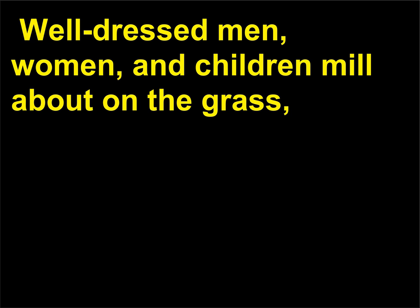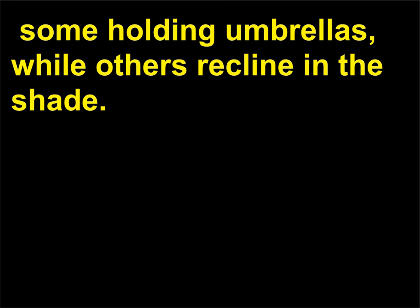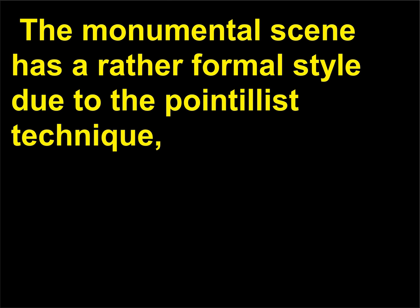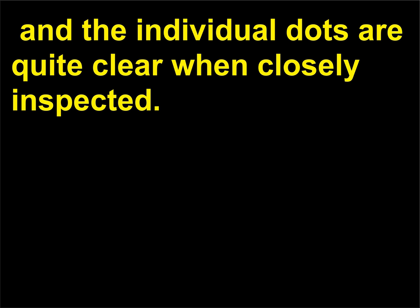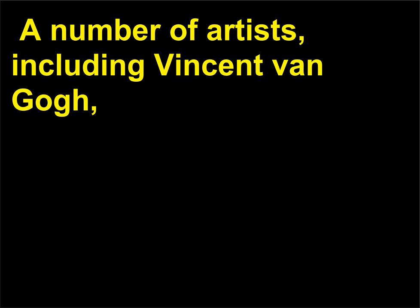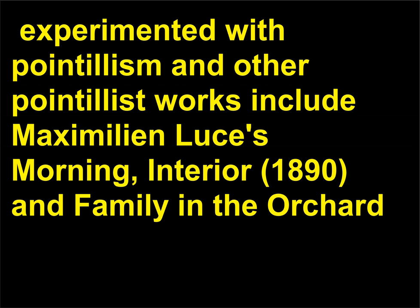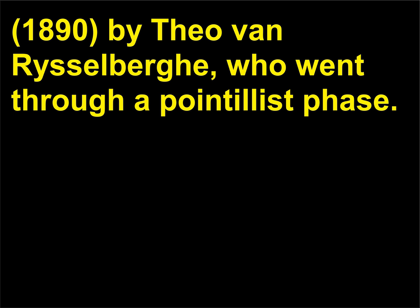Parisian Parisians relax along a river bank — well-dressed men, women, and children mill about on the grass, some holding umbrellas while others recline in the shade. The monumental scene has a rather formal style due to the pointillist technique, and the individual dots are quite clear when closely inspected. A number of artists, including Vincent van Gogh, experimented with pointillism. Other pointillist works include Maximilian Luce's Morning, Interior, 1890, and Family in the Orchard, 1890, by Théo van Rysselberghe, who went through a pointillist phase.